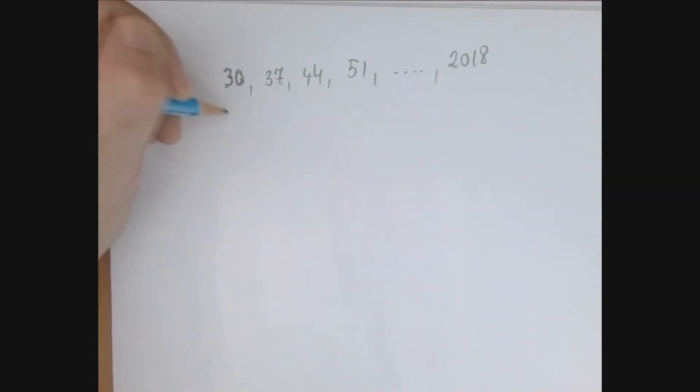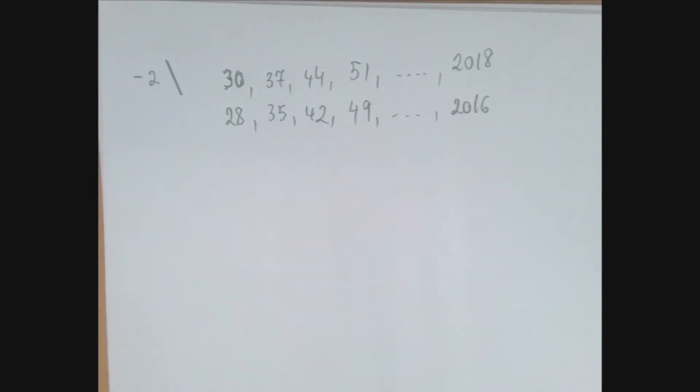So then 30 will become 28. 37 will become 35. 44 becomes 42. And notice, this is no accident that now the numbers that we are listing are divisible by 7. The last number is 2016. And yes, we did change the numbers, but all we want to know is how many numbers, and that was not changed.